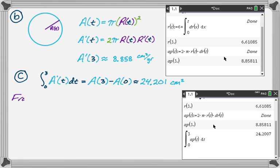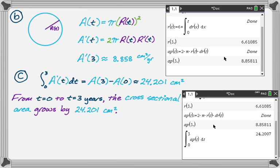So I'm going to write: from t = 0 to t = 3 years. When you're interpreting, you always want to use the units on things. That's how you interpret. So from t = 0 to t = 3 years, what did we find? We found the cross-sectional area increased because our integral was positive. So increased or grows by 24.201 square centimeters. On that 3-year interval, you picked up 24.201 square centimeters of cross-sectional area.